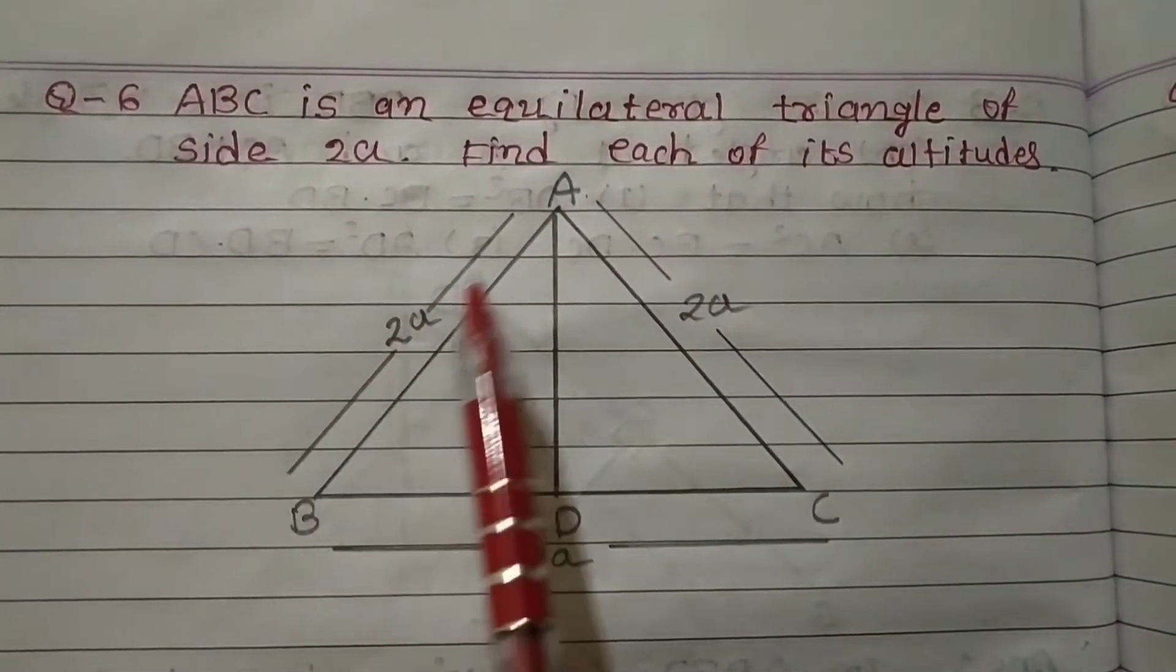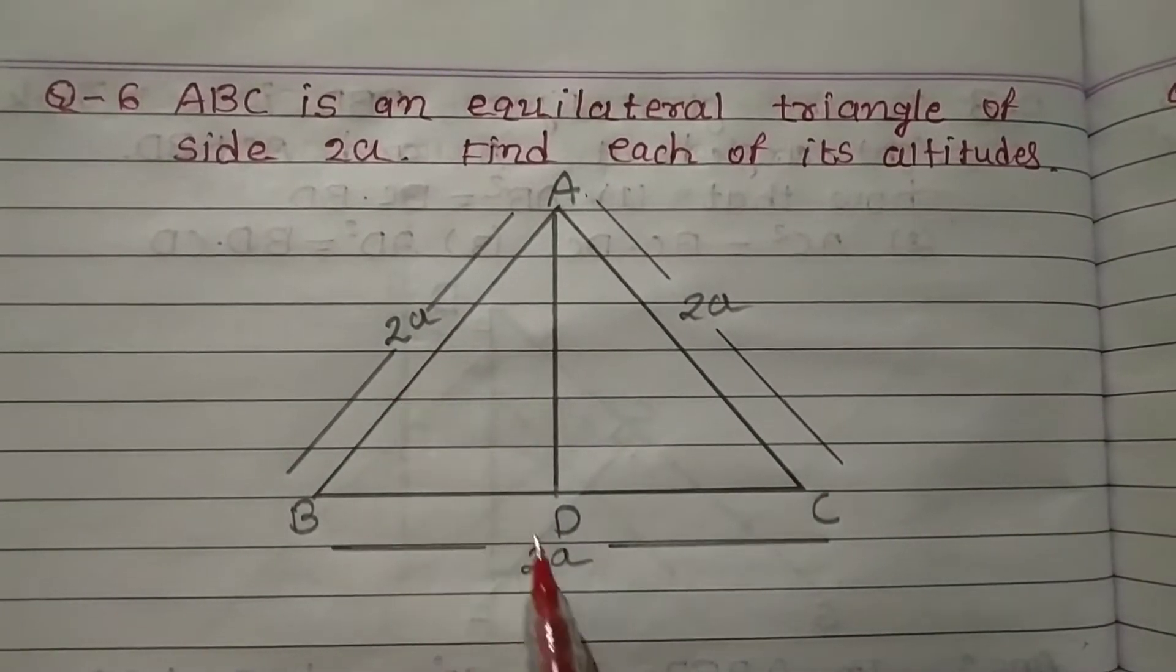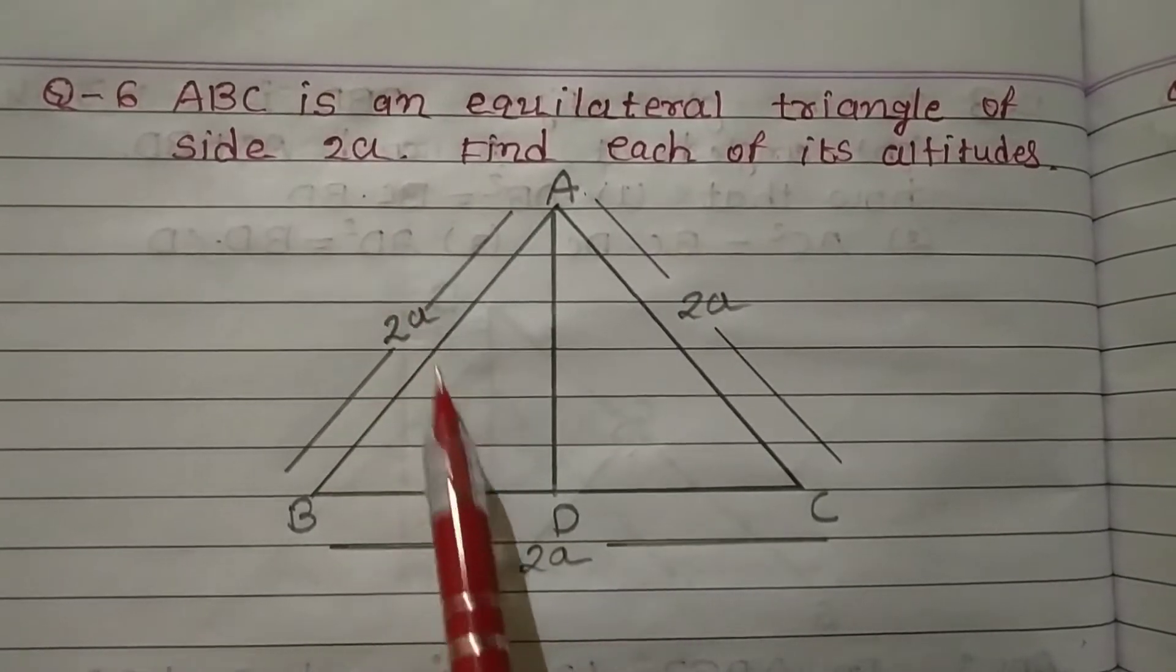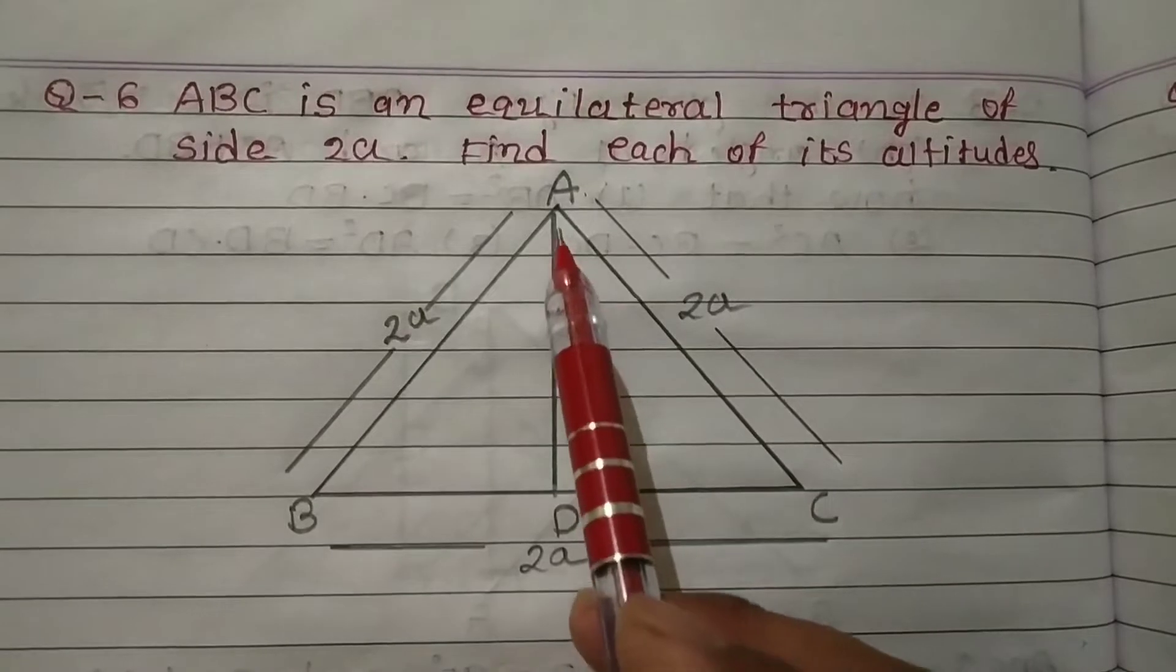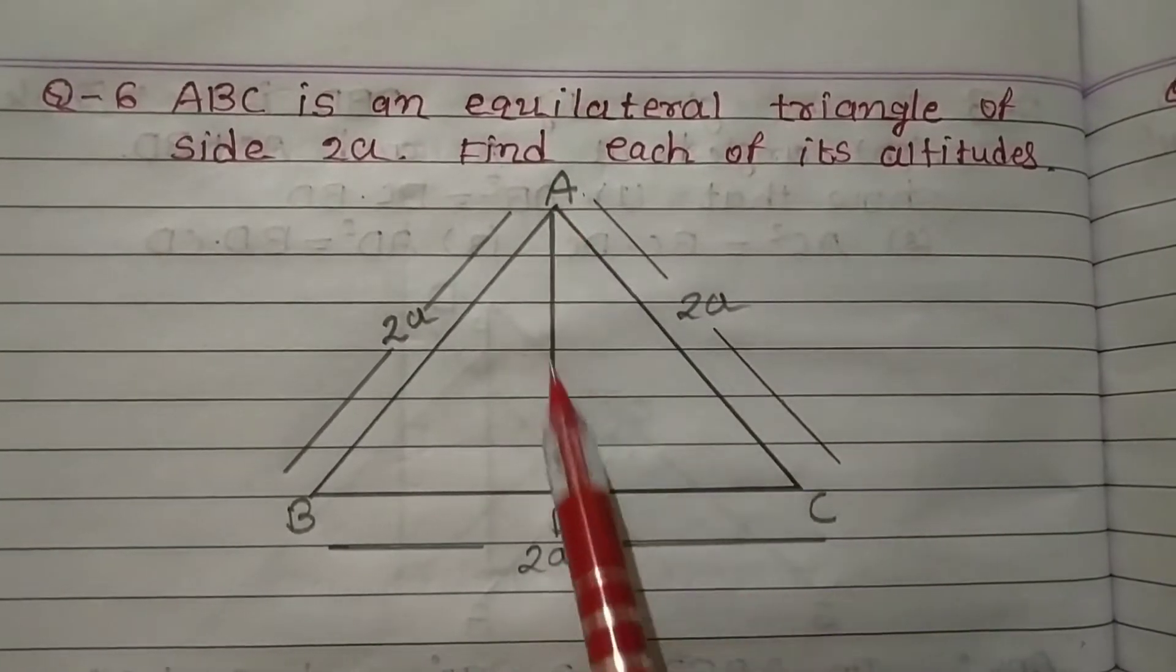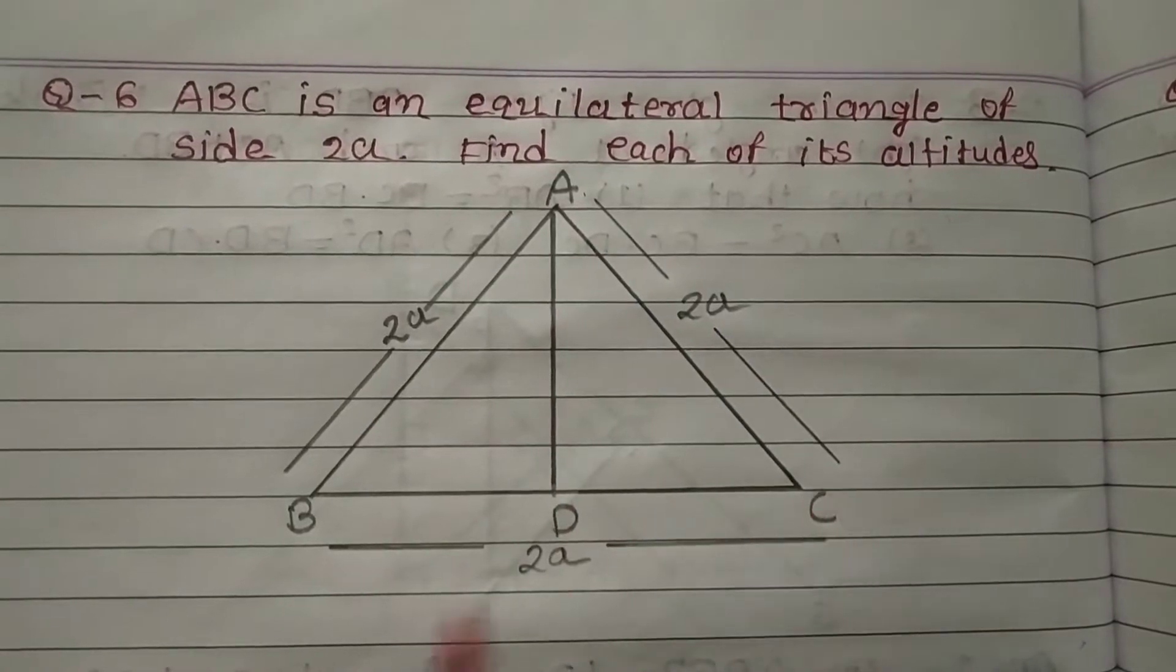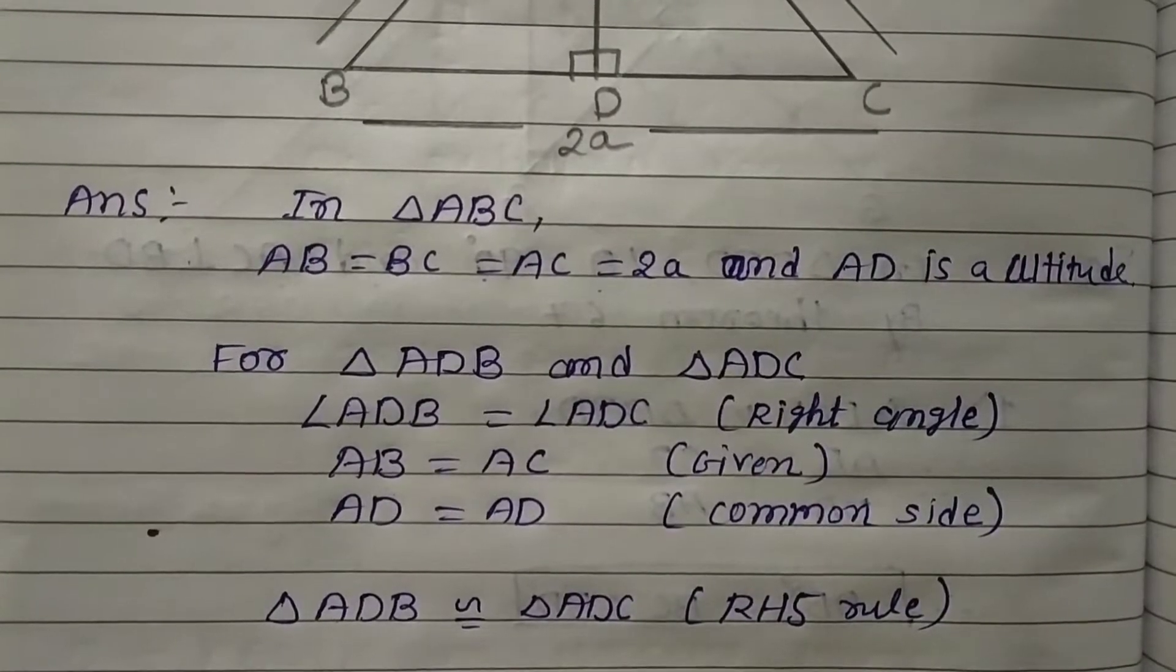Here, triangle ABC is given in which all sides are equal, and the side is given as 2a. We want to find all the altitudes. We take one altitude AD on BC. Now let's see the solution.